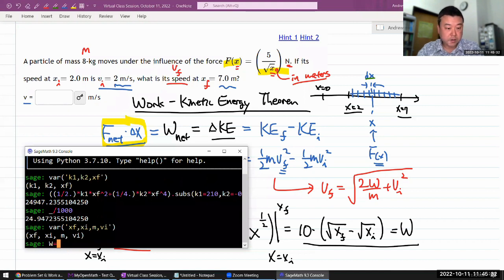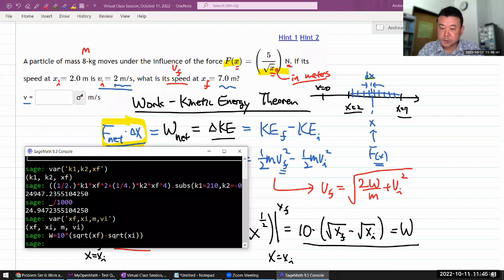So I'm going to say my work done is 10 times square root of x-final minus square root of x-initial, my W. And my v-final is going to be this expression. Square root of 2 times work done divided by mass plus v-initial squared. And on this expression, I'm going to do this numerical substitution. Work, I'm going to leave it alone. Because hopefully this will all get substituted and we'll see.